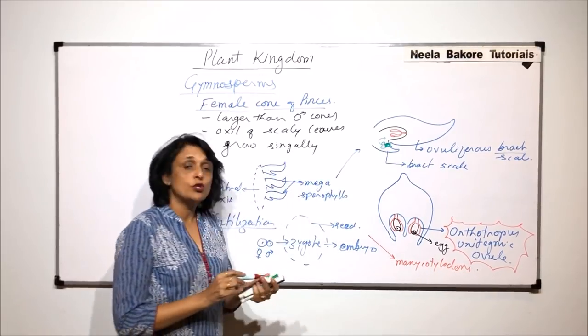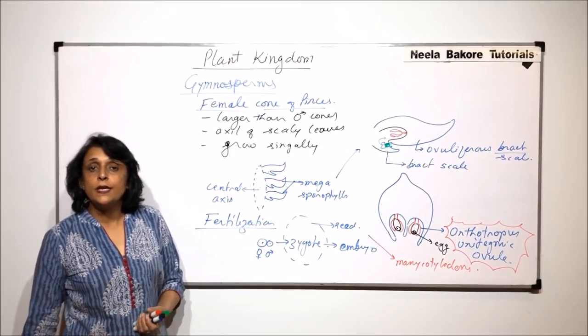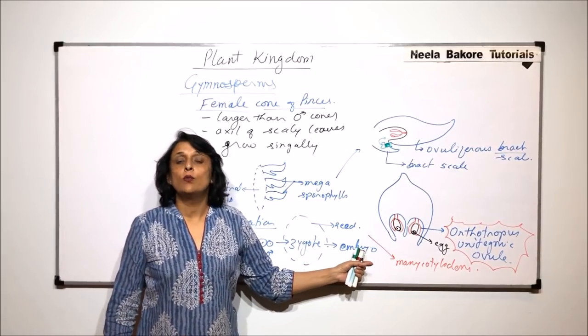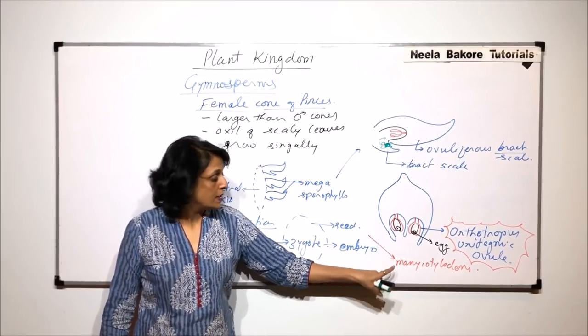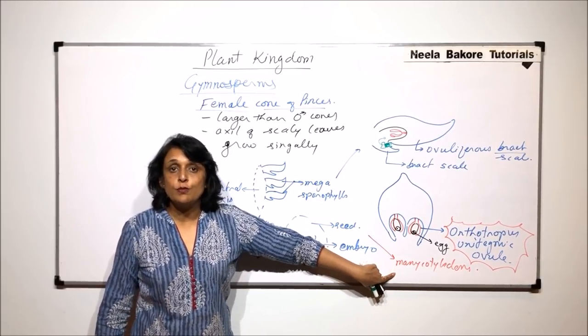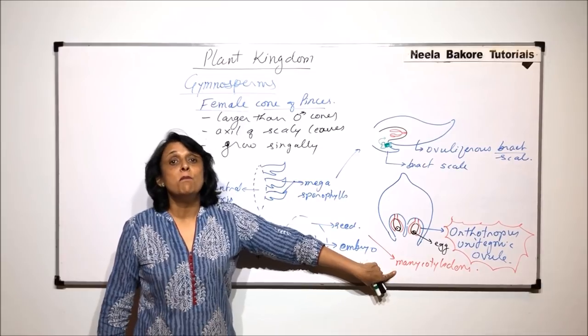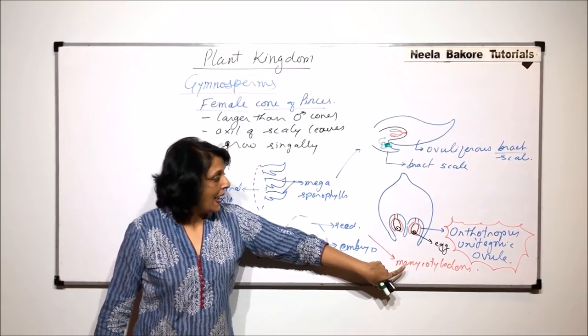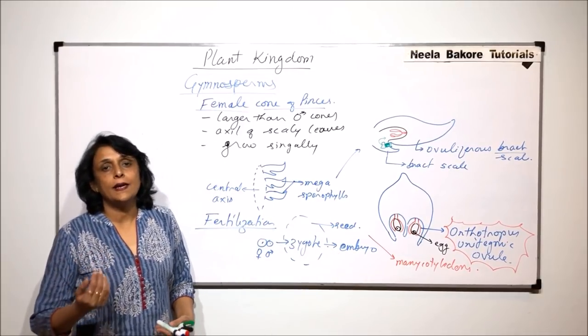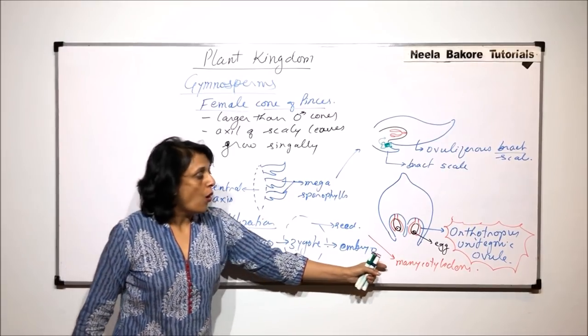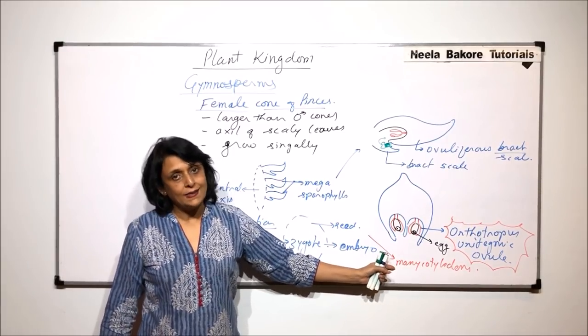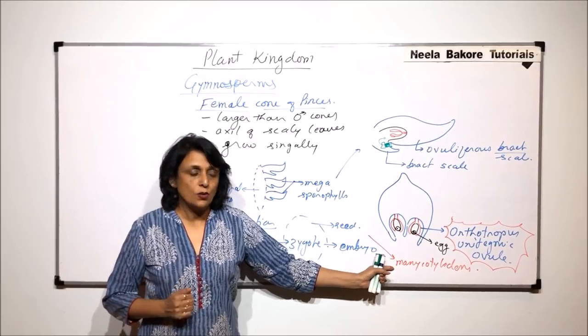When we talk of angiospermic plants, we talk about seeds where the cotyledons are either one or two. Those seeds are known as monocots and dicots. Whereas in case of gymnosperms, the seeds are with many cotyledons. All of the structures that is radicle, plumule, the axis, hypocotyl, epicotyl, all those structures are going to be as they are in other seeds also, and a single seed coat is going to be there.